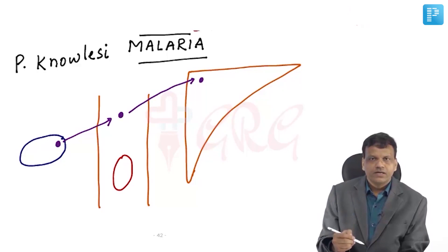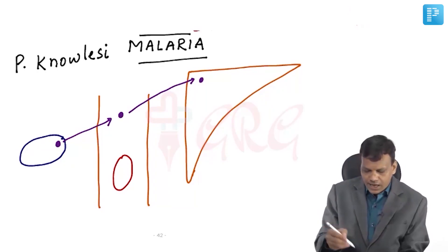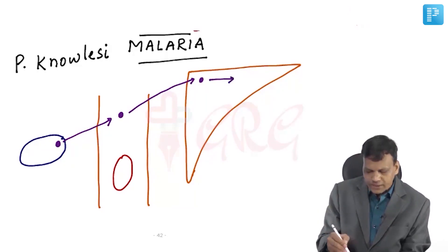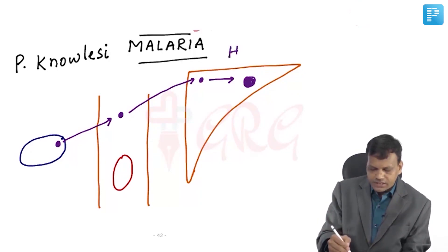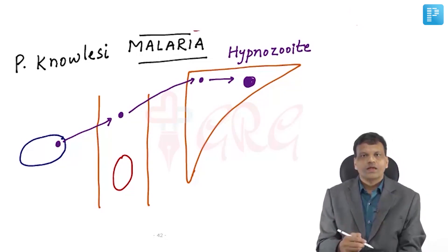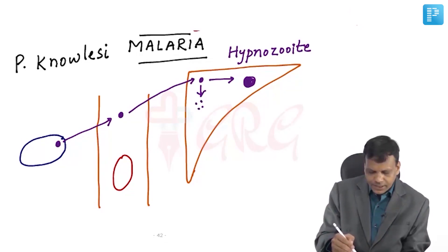In the liver, the parasite has two fates: it can either go dormant — this dormant stage is called the hypnozoite stage — or more commonly it goes to the liver and starts multiplying.